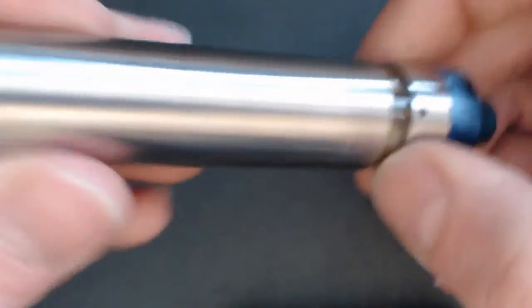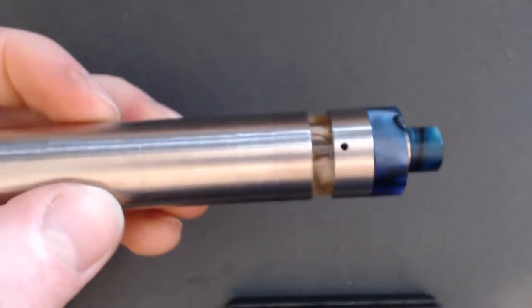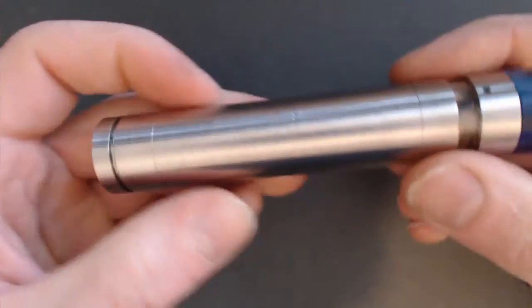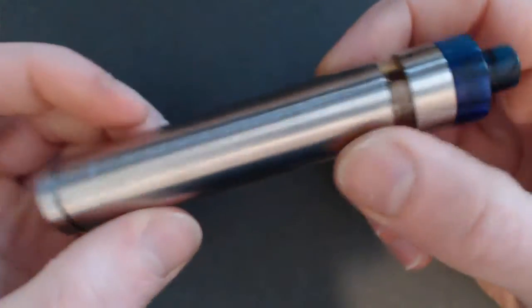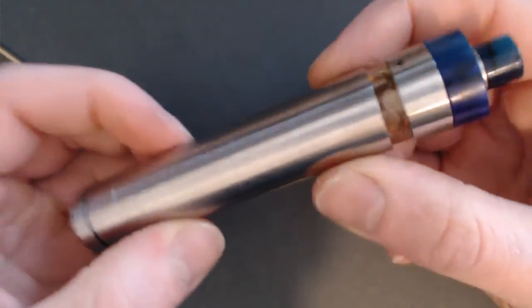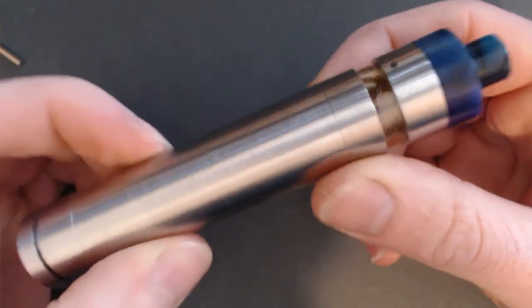Right, there we go. Let me zoom out a little bit. That is the SXK Corolla on the Nebula 18650 in hybrid mode. It looks quite nice.